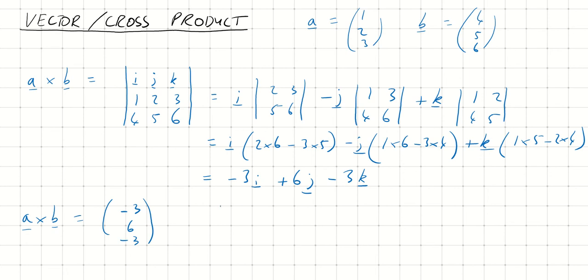It's worth noting at this point, if I were to work out B cross A, I would get a different answer. In fact, B cross A would give me 3, minus 6, 3, which is actually the negation of A cross B. So the order does matter. If you do B cross A, you actually get negative A cross B.